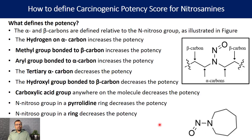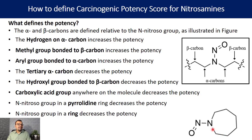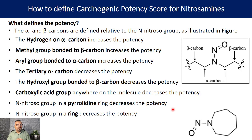It is also important to note that ring size decreases the potency of the nitrosamine — the bigger the ring size, the lower the carcinogenic potency. For example, a ring with seven carbon atoms will have lower carcinogenic potency compared to a five-membered or four-membered ring. As the ring size increases, the potency of the nitrosamine compound decreases.